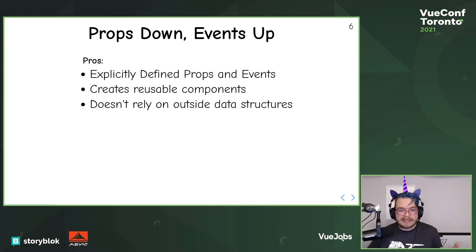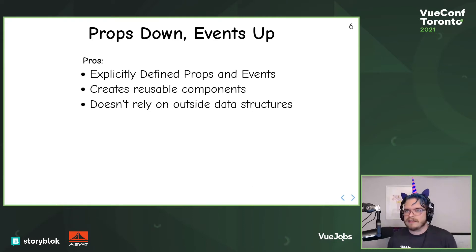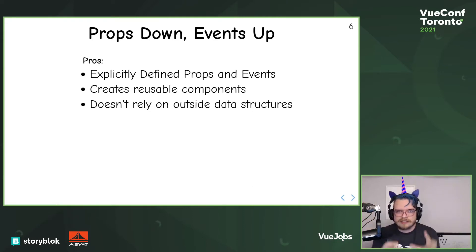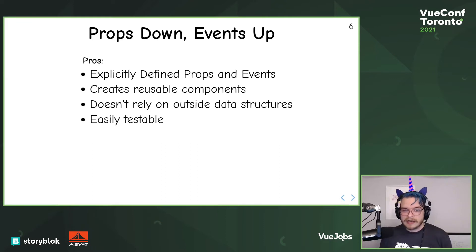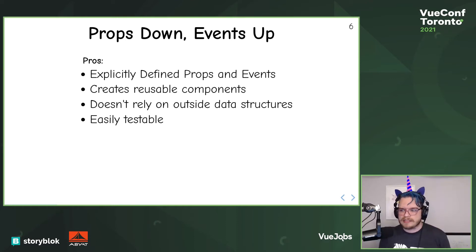In Vue 3, you can define your props as in Vue 2, but you can also define your events using the emits property. This also helps create reusable components — everything you need to make the component work is right there, the props and the events. It doesn't rely on outside data structures, and it's easily testable. You say, give it these props, click this button, it should emit this event.